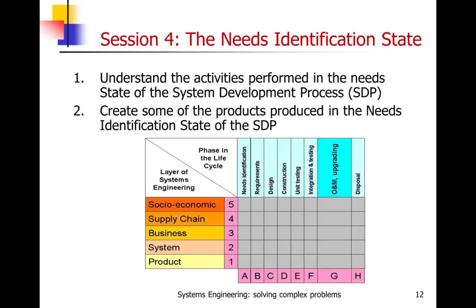We start with the needs identification state. For each of the states, the common theme is to understand the activities performed in that state of the system development process. You can see the framework here — we're focusing on the system level in layer two, and we're going to go through each of the states: needs identification, requirements, design, construction, and so on.